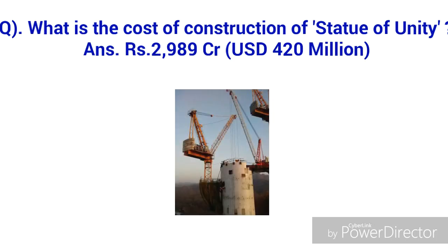What is the total cost of construction of the Statue of Unity? The cost of construction of the statue is 2,989 crore Indian rupees, which is equal to 420 million US dollars.